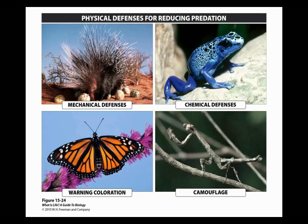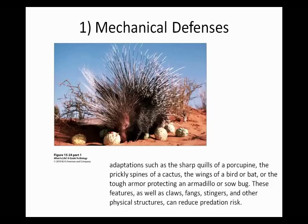Warning coloration, like the monarch butterfly — monarch butterflies are poisonous, so birds are not going to swoop down and grab them because they have learned that that coloration means they're poisonous. And then one of the most obvious physical defenses is camouflage — being able to blend into your environment so that things that want to eat you can't see you. Prickly spines or armor like on the armadillo, claws, fangs, and stingers are other physical structures that can help to reduce predation risk.